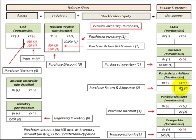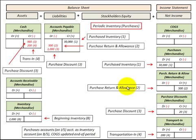Let's look at a purchase discount. Say we pay for $1,000 worth of goods and take the discount: we reduce accounts payable by $1,000, credit or increase the Purchase Discount account by $20, and then credit cash for the balance of $980.